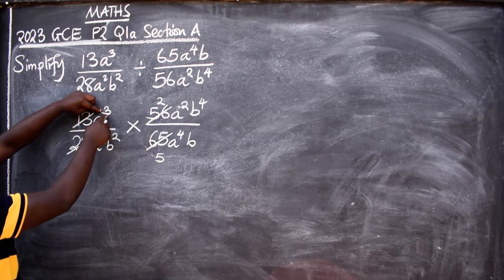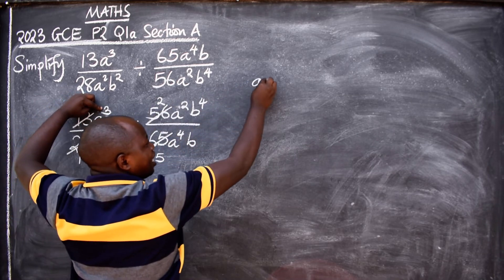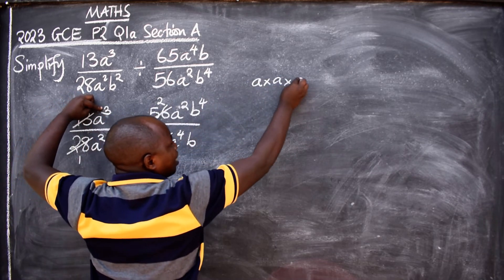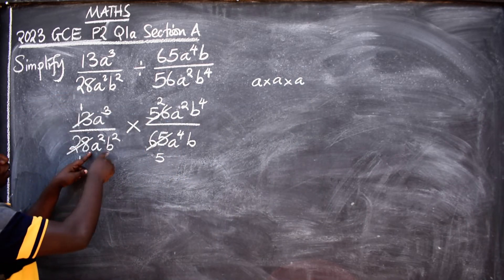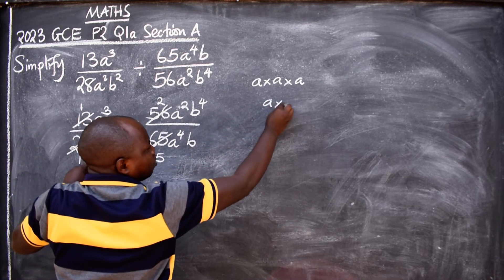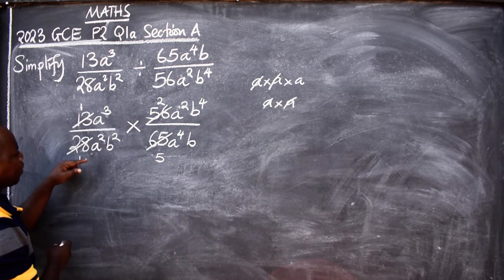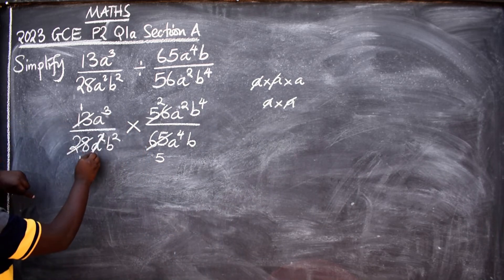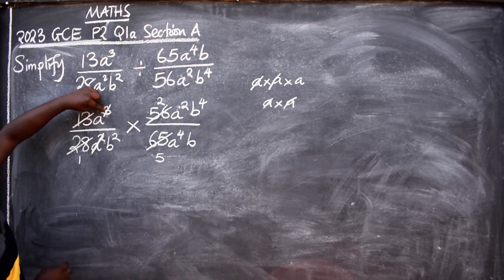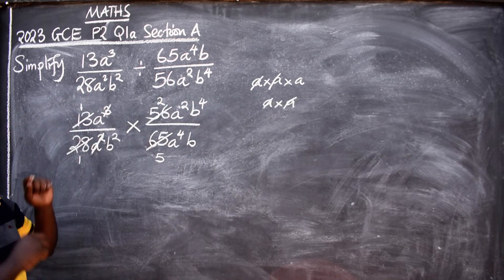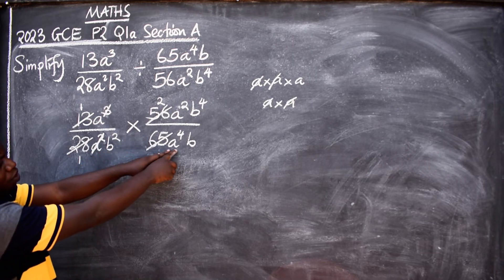I have three A's here, that is the meaning of A³. It means A times A times A. I have three of them. How many do I have here? Two. So down here I've got two of them. Cancel two of them here, I also cancel two there. If I cancel two, I will remain with one A.